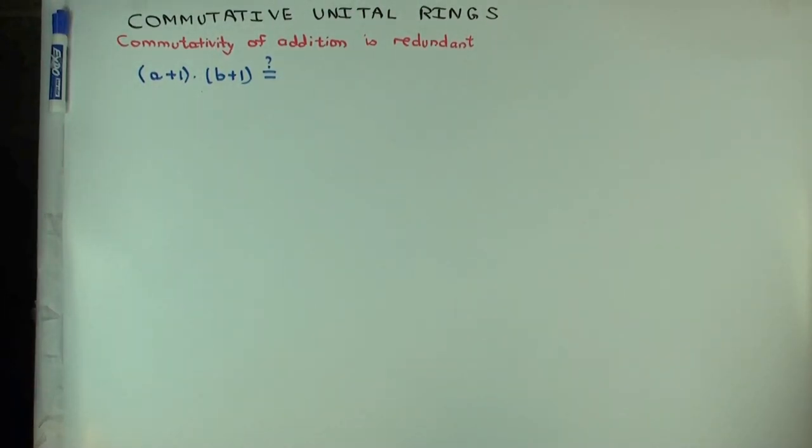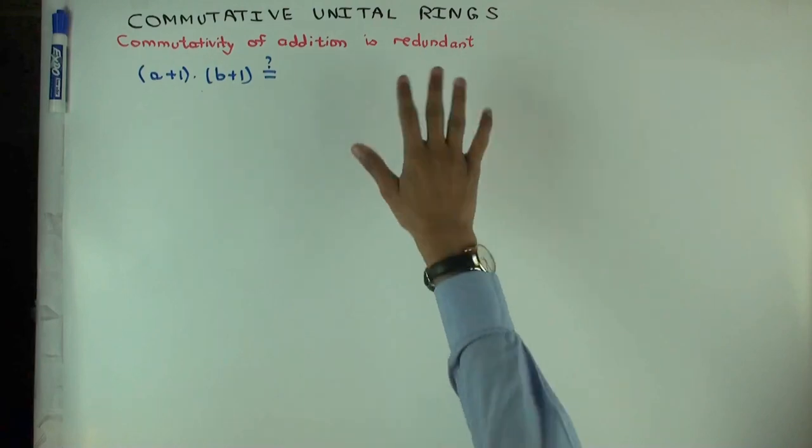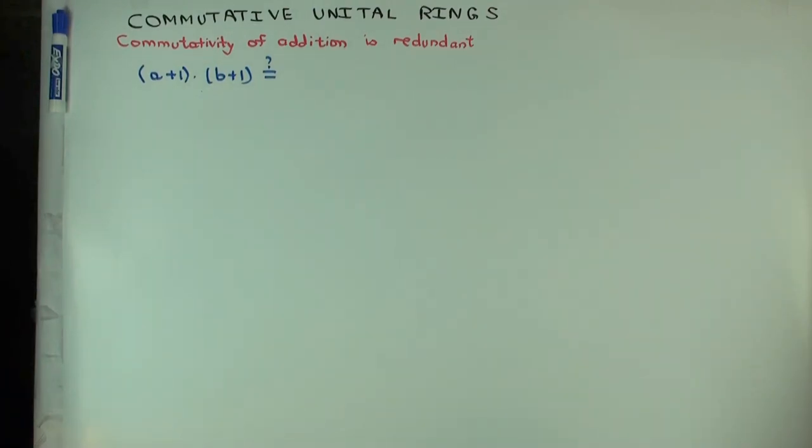Okay, so in this video I'm going to do a few examples of the relation between the various axioms associated with commutative unital rings.